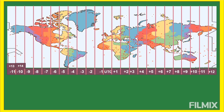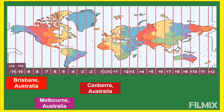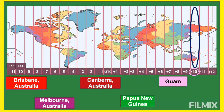Next is GMT+10 or UTC+10, meaning these places are ten hours ahead of UTC, or two hours ahead of the Philippines. These places include Brisbane (Australia), Melbourne (Australia), Canberra (Australia), Papua New Guinea, and Guam, plus many other places under GMT+10.